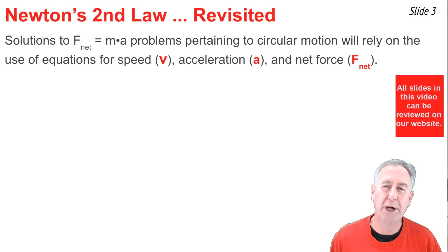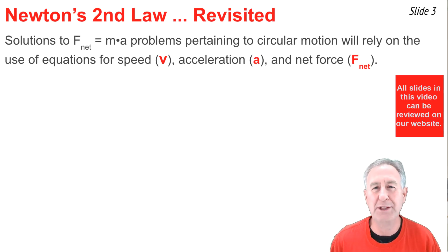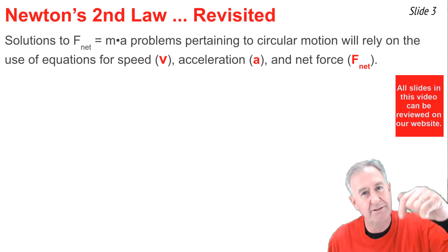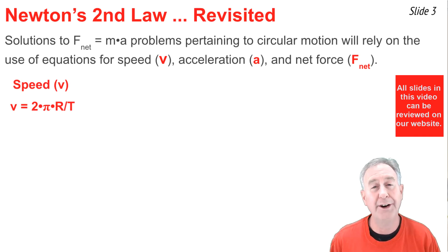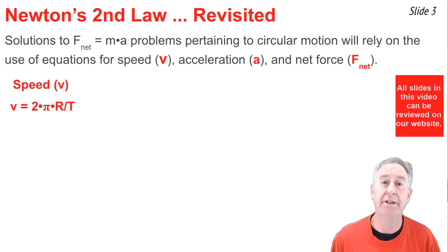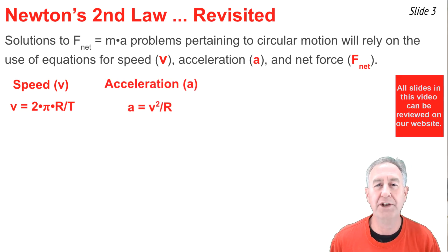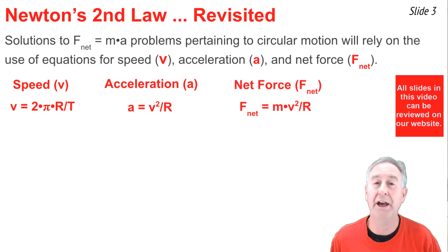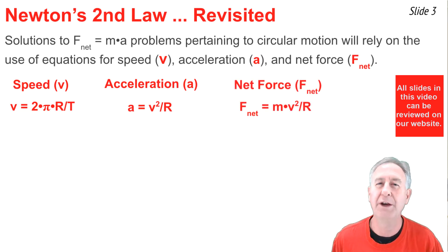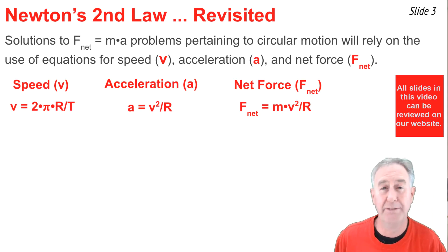F_net = ma problems associated with moving in circles rely upon the equations for speed, acceleration, and net force. The equation for speed is v = 2πr / T, where r is the radius of the circle and T is the period — the time to go around the circle once. The equation for acceleration is a = v² / r, and the equation for net force is F_net = ma, or equivalently F_net = mv² / r.